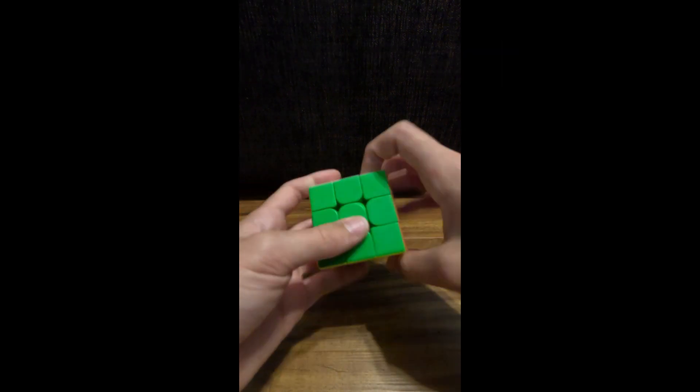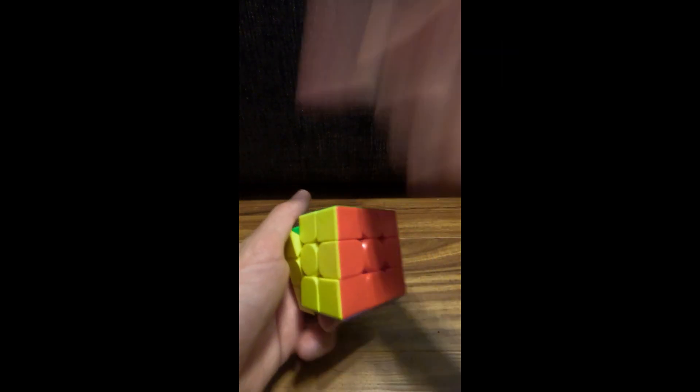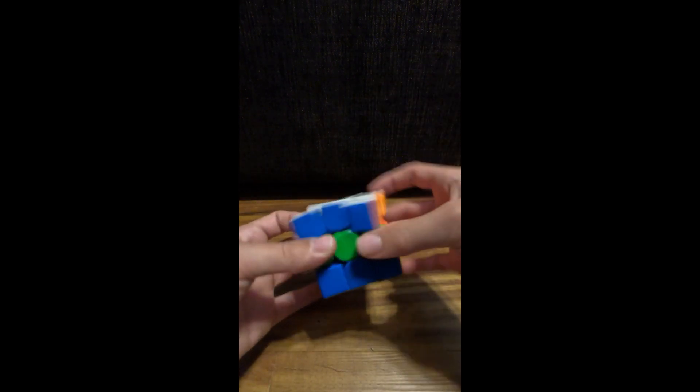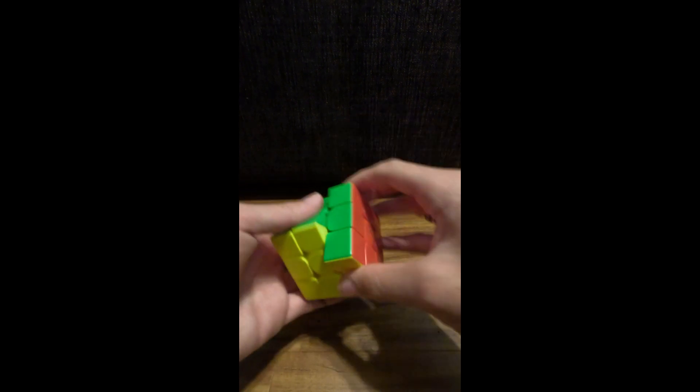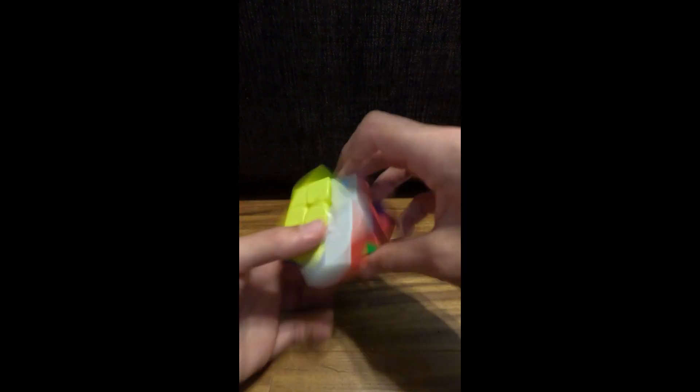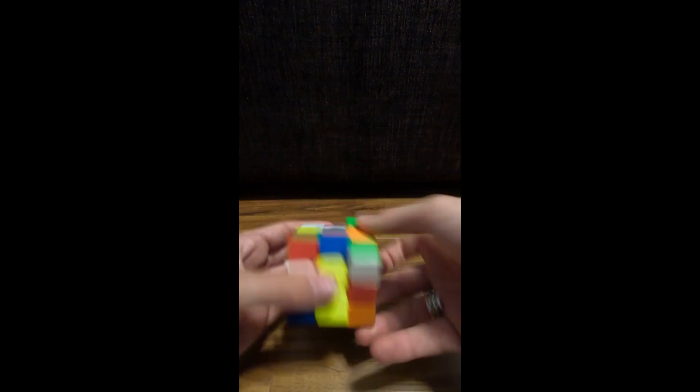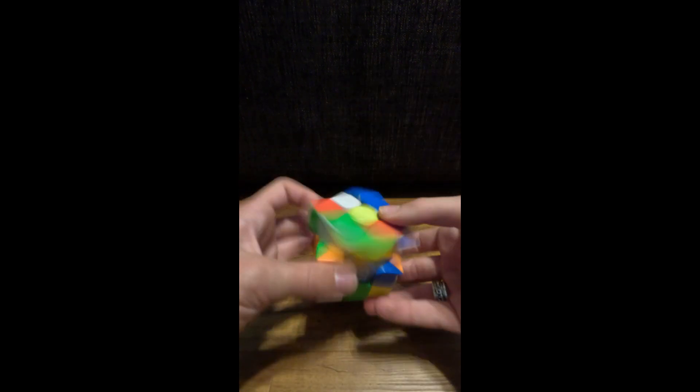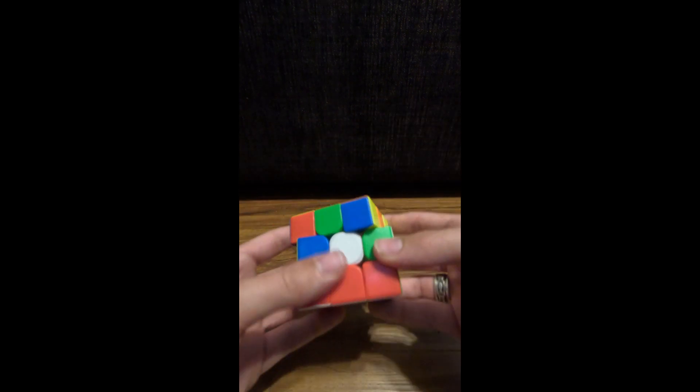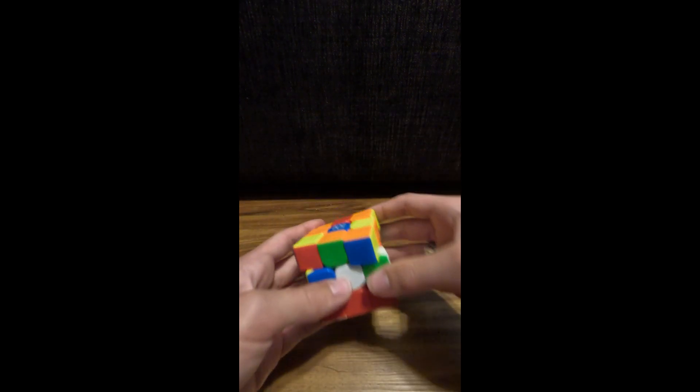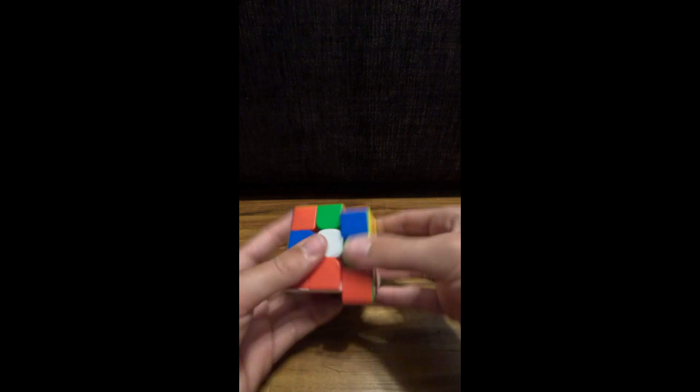The next cube is called the Nex cube. It's about ten dollars and it's really good for its price. Usually a ten dollar cube would be really bad, but this is surprisingly good. It does not have magnets like the better cubes do, but it actually has pretty good corner cutting.